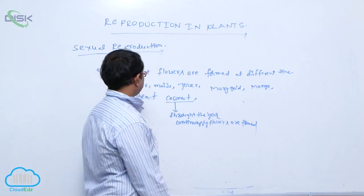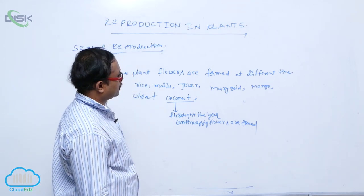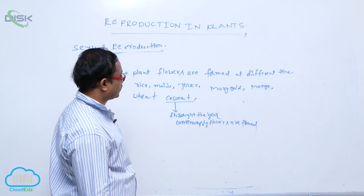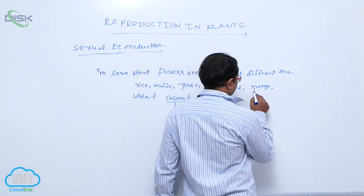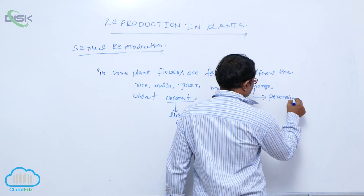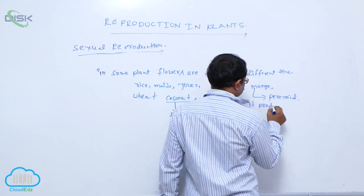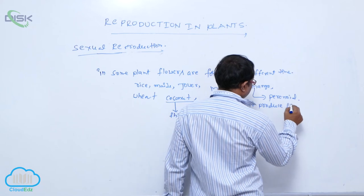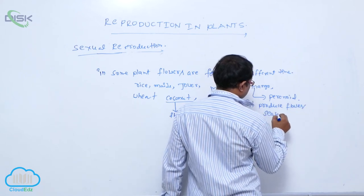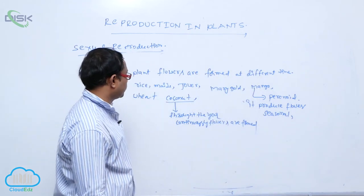In rice, maize, wheat, jawa, and marigold, they are annual plants and they produce flowers only once in their life cycle. Mango is a perennial plant, so it produces flowers seasonally, depending upon that at a different time.